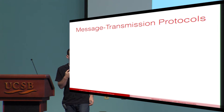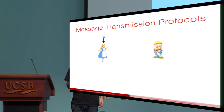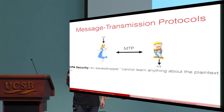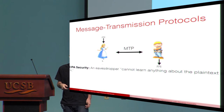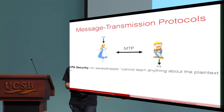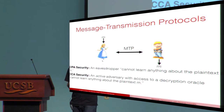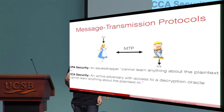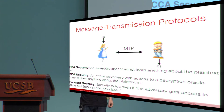A message transmission protocol is a protocol between Alice and Bob. Alice's input is a message, they engage in some protocol, and in the end Bob outputs the same plaintext. CPA security says intuitively that an eavesdropper cannot learn anything about the plaintext M, formalized via an indistinguishability game. CCA security says that an active adversary with access to a decryption oracle — who can ask for decryptions of anything but the challenge ciphertext — should still be unable to learn anything about the message. There's also the orthogonal notion of forward secrecy, where security holds even if Alice and Bob later leak their secret keys.